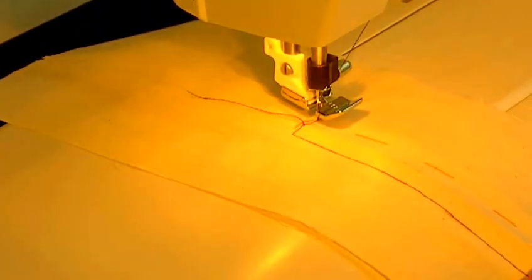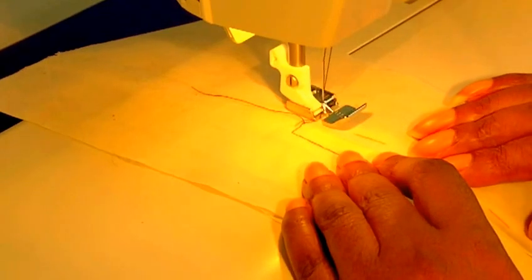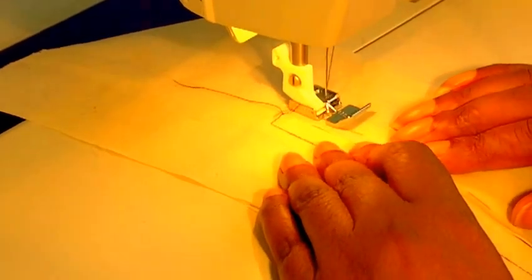Pivot your work to you so the rest of your work is back of the machine and the top of the zip is towards you. Put your foot down and then you start stitching. Let's sit back and get a straight line here for you.